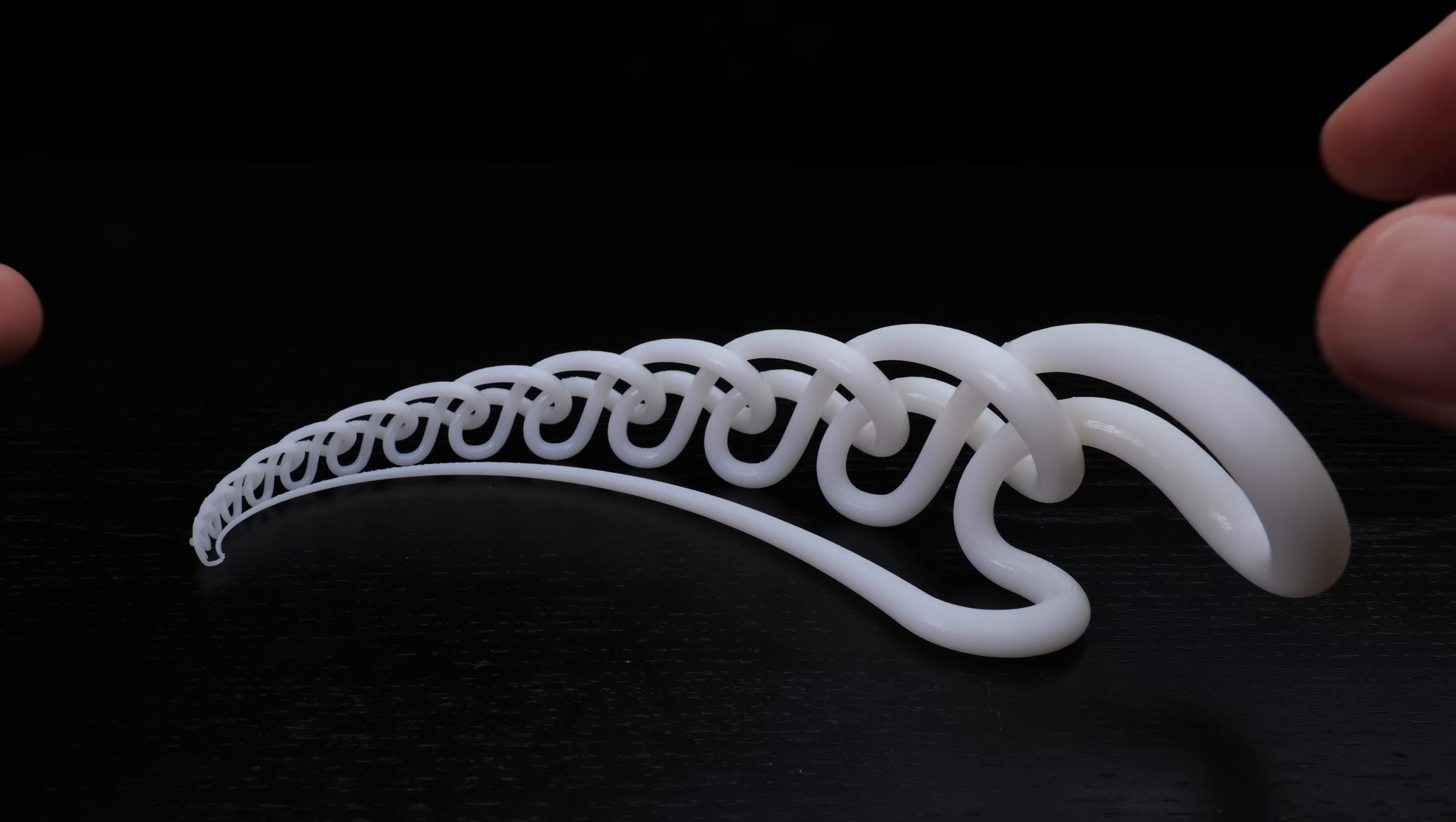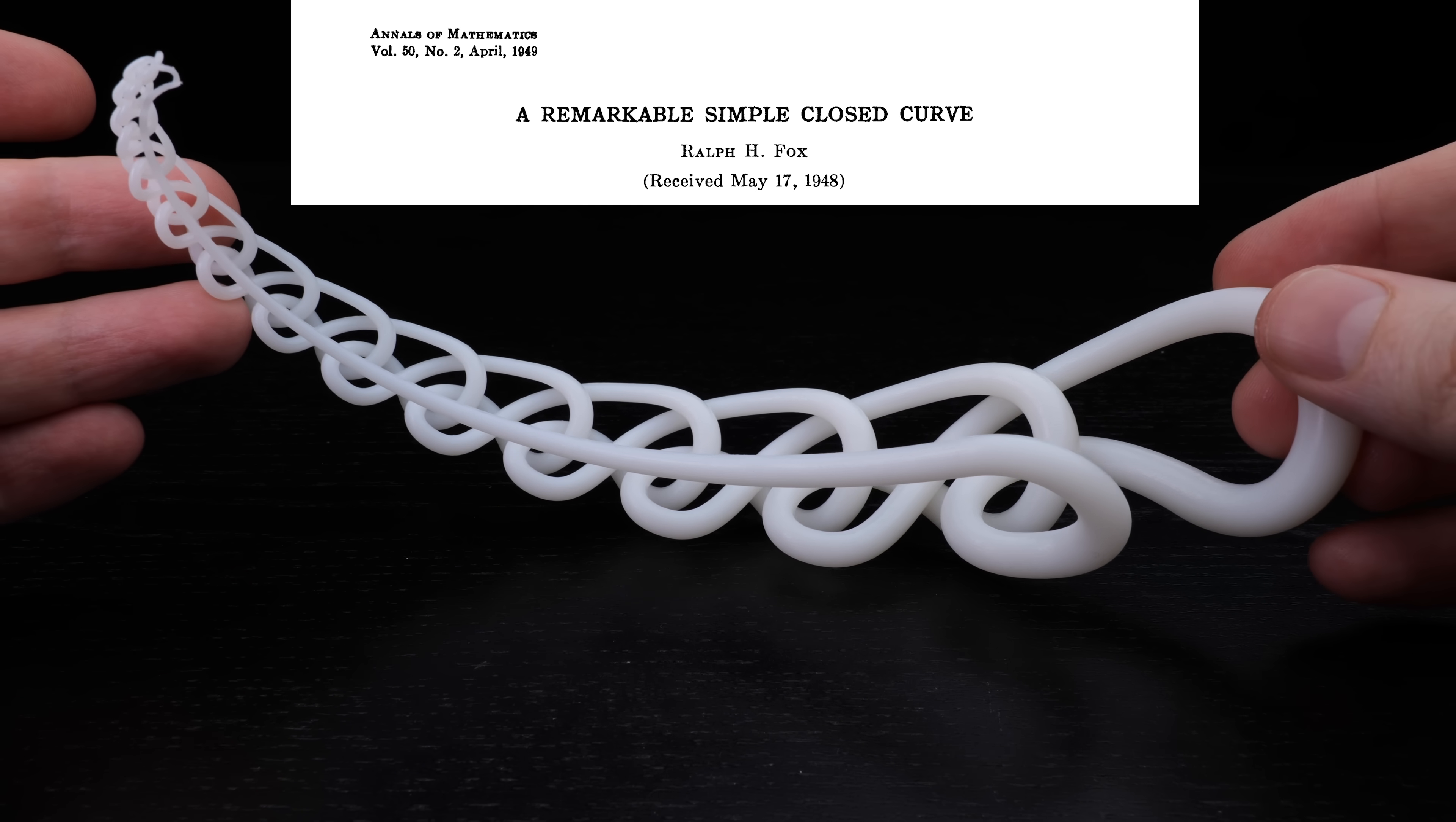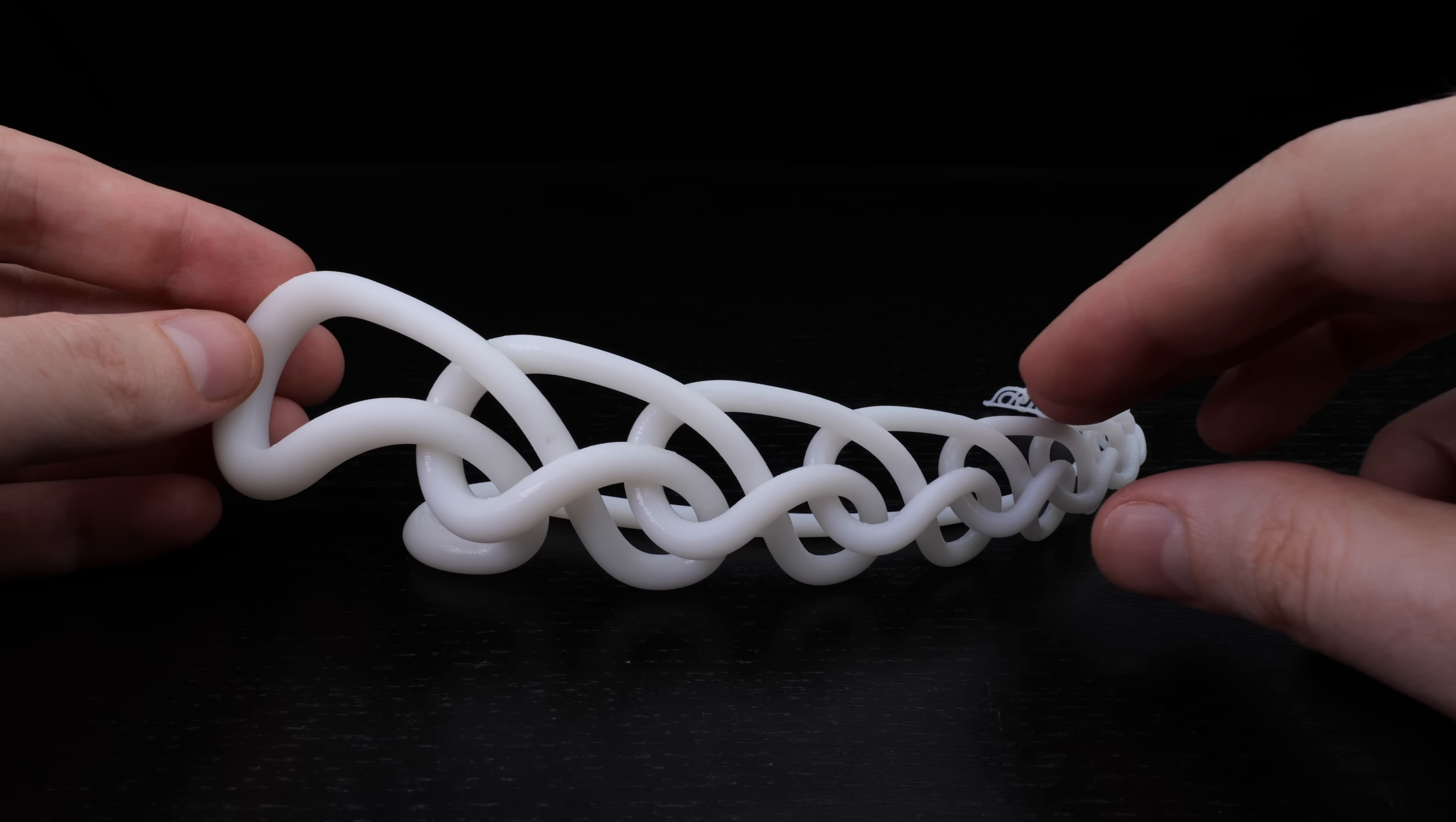Here's a really interesting example due to a mathematician called Ralph Fox. You could call it a wild slipknot. Just like the other wild knot, it looks like it has infinitely many tangles, but well we can just start undoing each tangle from the end.